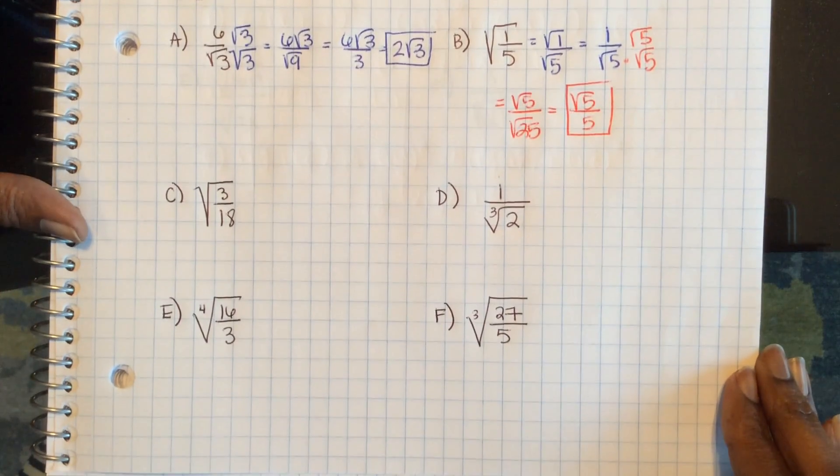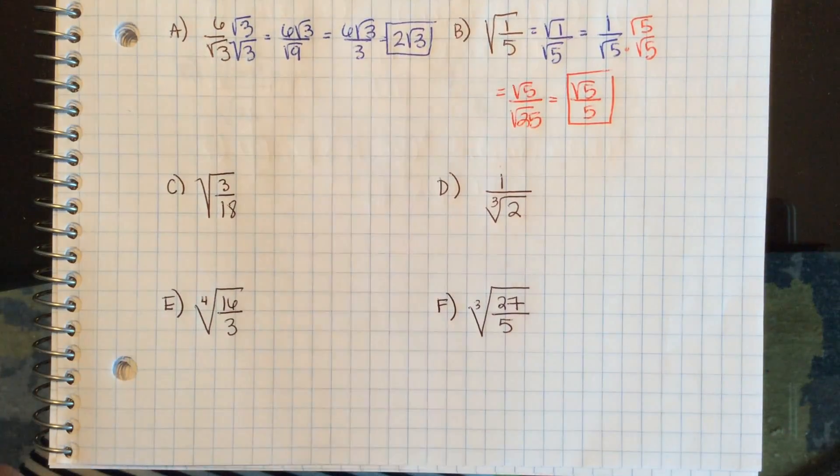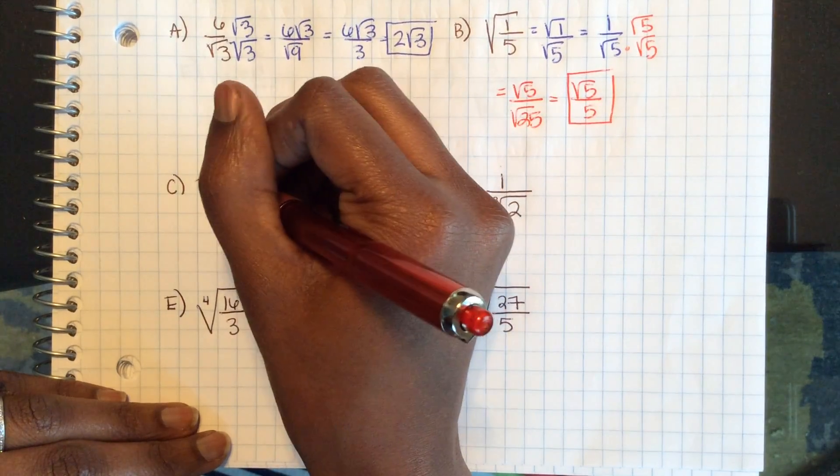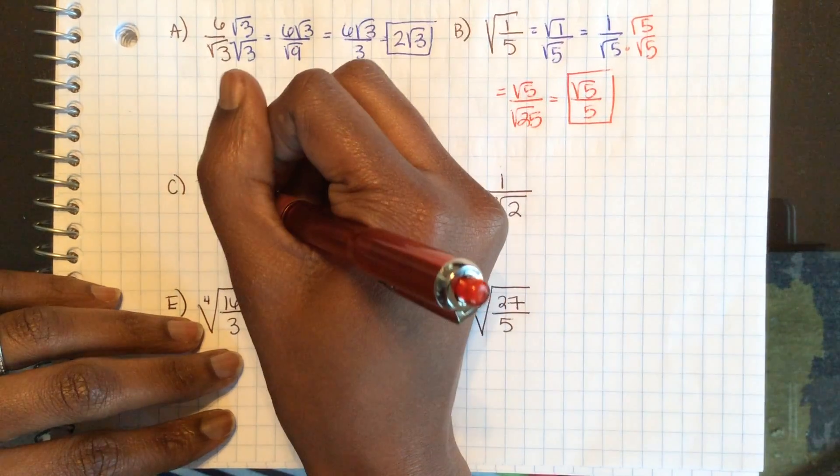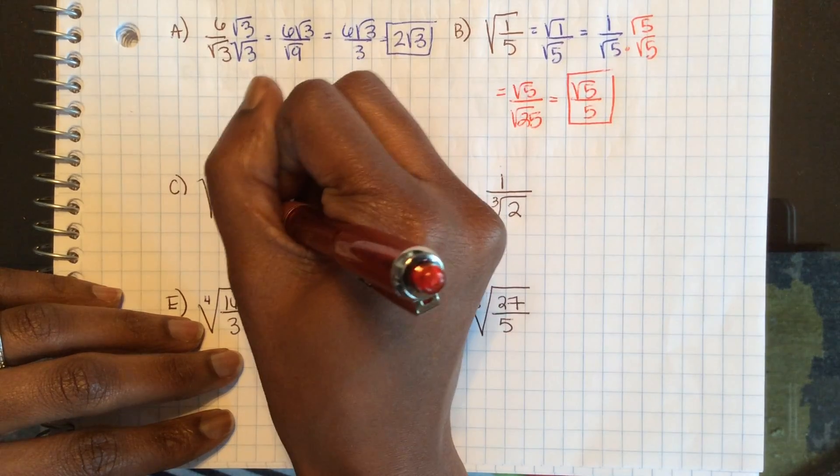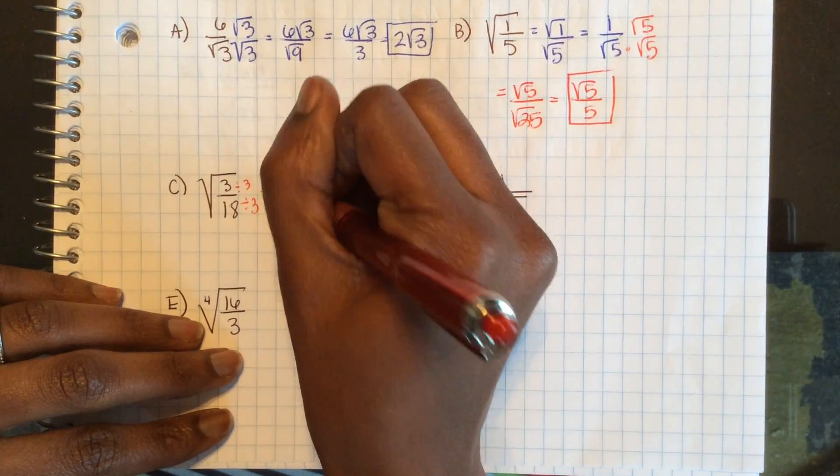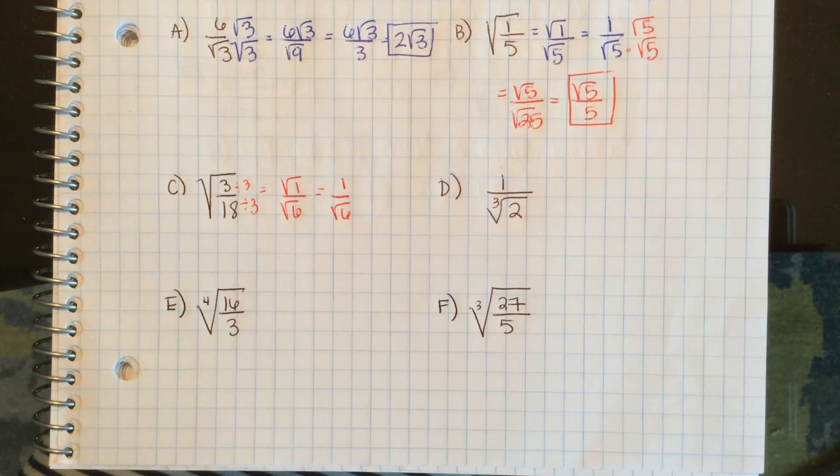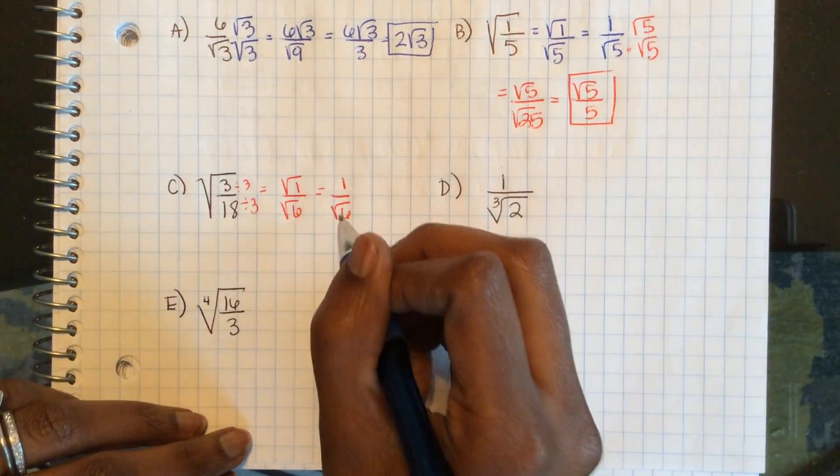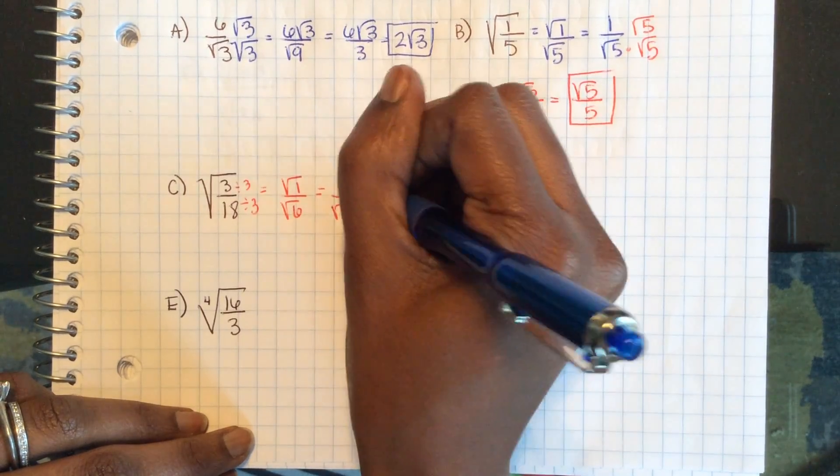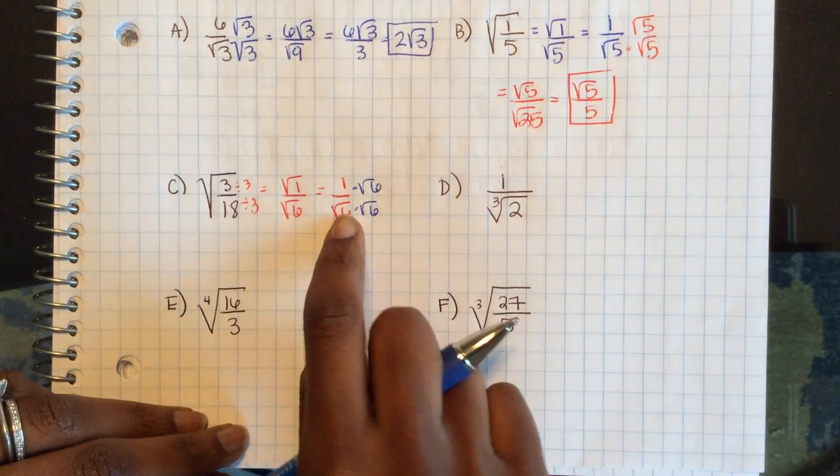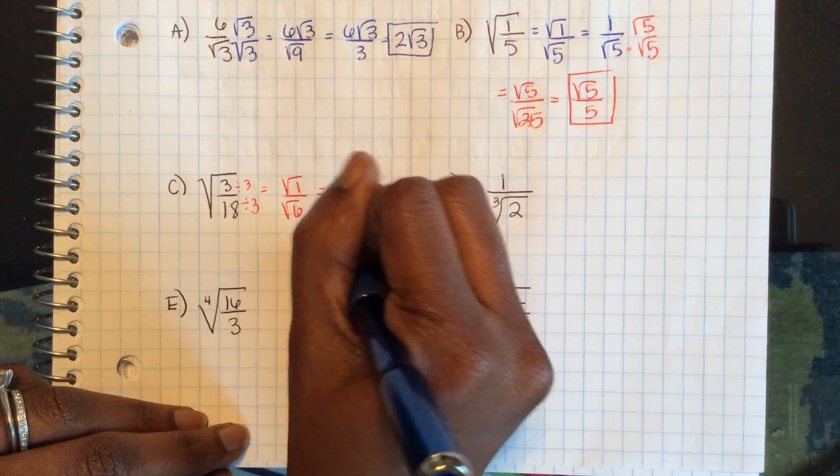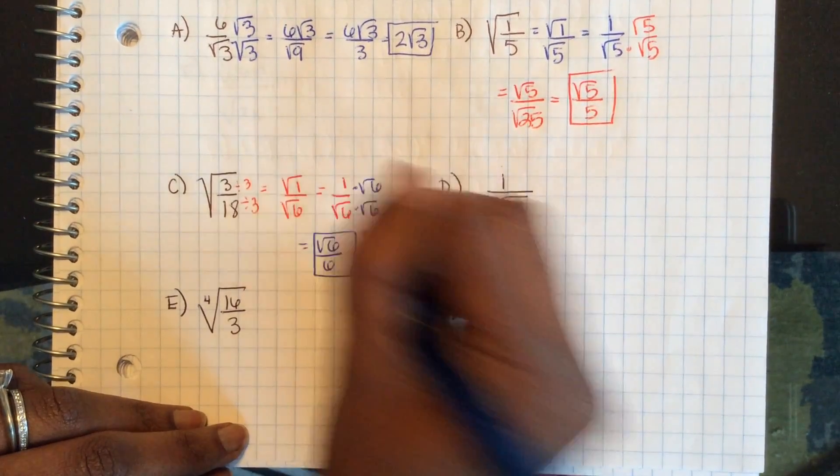Okay, let's look at C for another square root. So, remember, simplify your fraction before you simplify your radical. These are both divisible by 3. So, this is square root of 1 over square root of 6, which is 1 over square root 6. So, now, we don't like radicals in the denominator. I can multiply by square root 6 to make square root of 36, which is 6. So, this becomes square root 6 over 6. I skipped a step there.